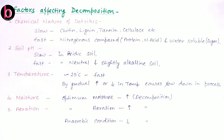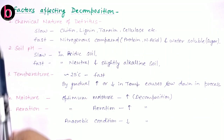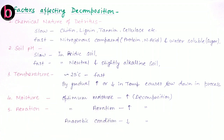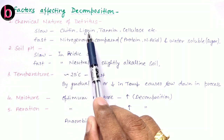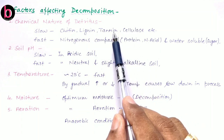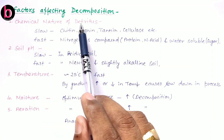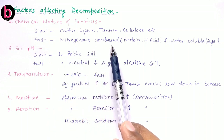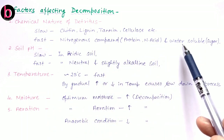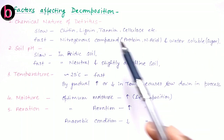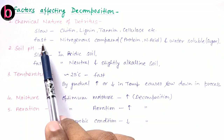Now about the factors affecting decomposition — there are five. The first is the chemical nature of detritus. If detritus is highly enriched with chitin, lignin, tannin, or cellulose, decomposition will be very slow. At the same time, if detritus is enriched with nitrogenous compounds like protein, nucleic acid, and water-soluble substances like sugars, decomposition will be very fast.